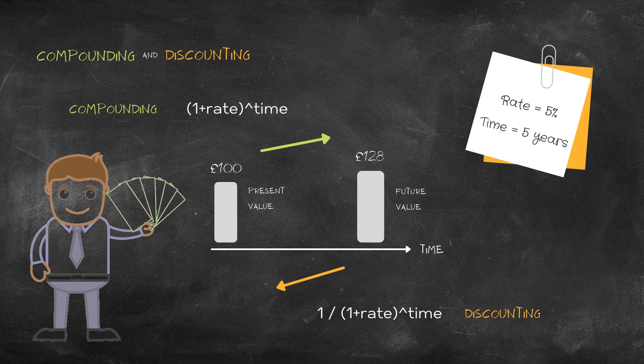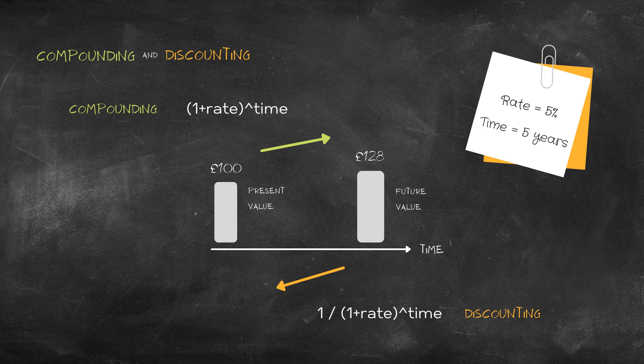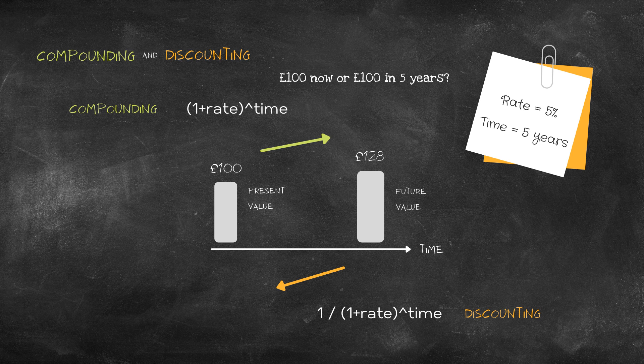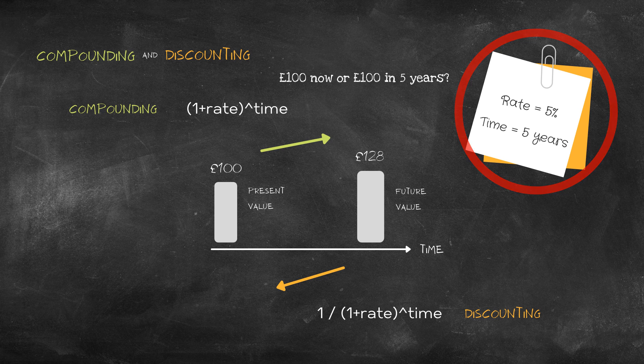Let's say you were offered a hundred pounds now or a hundred pounds in five years time. In five years time at a rate of five percent per annum, your hundred pounds would become 128 pounds.